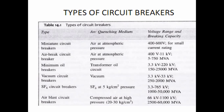Next is the air circuit breaker, which uses air at atmospheric pressure, with a voltage of about 400 V to 11 kV and power handling capacity of 5 to 720 MVA. Then there is the minimum oil circuit breaker, which uses transformer oil as arc quenching media. The vacuum circuit breaker uses vacuum as arc quenching media. The SF6 circuit breaker uses SF6 gas as quenching media. The air blast circuit breaker uses compressed air to quench the arc. Depending upon the various arc quenching methods, circuit breakers are classified into different types, and also depending upon voltage level, current rating, and power rating capacity.